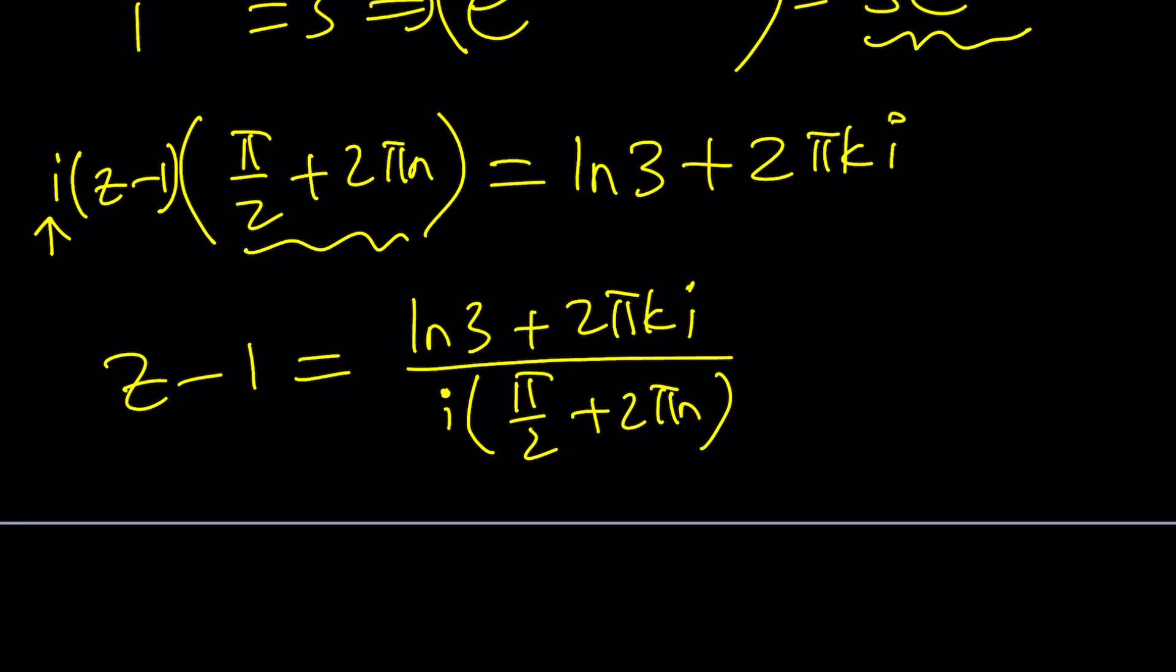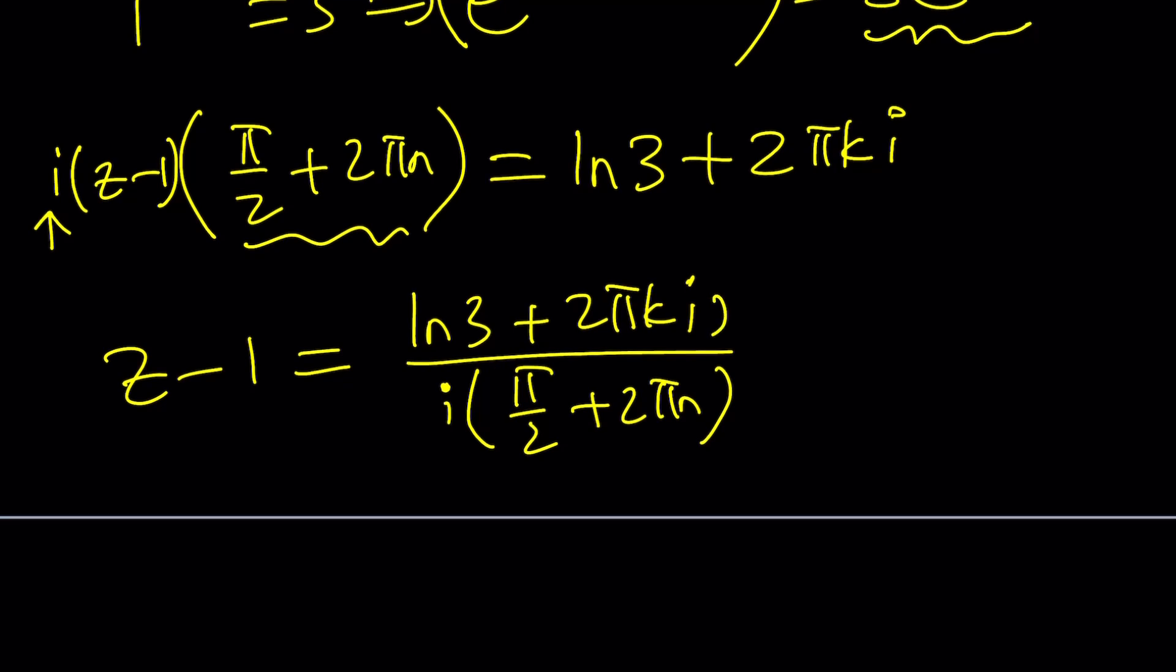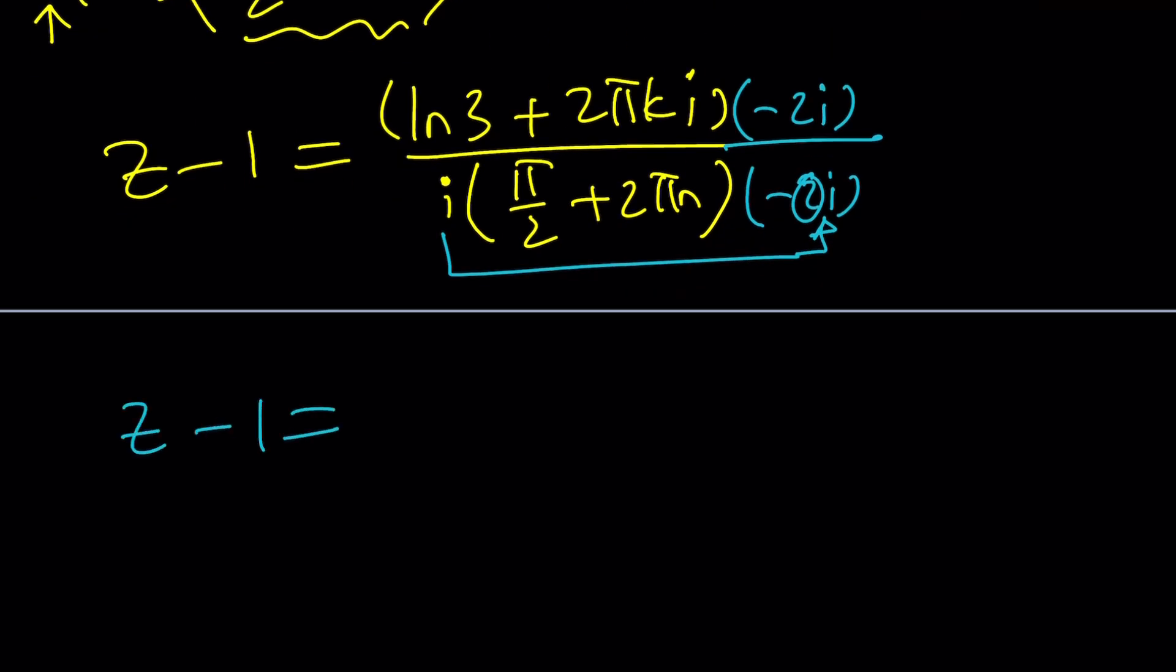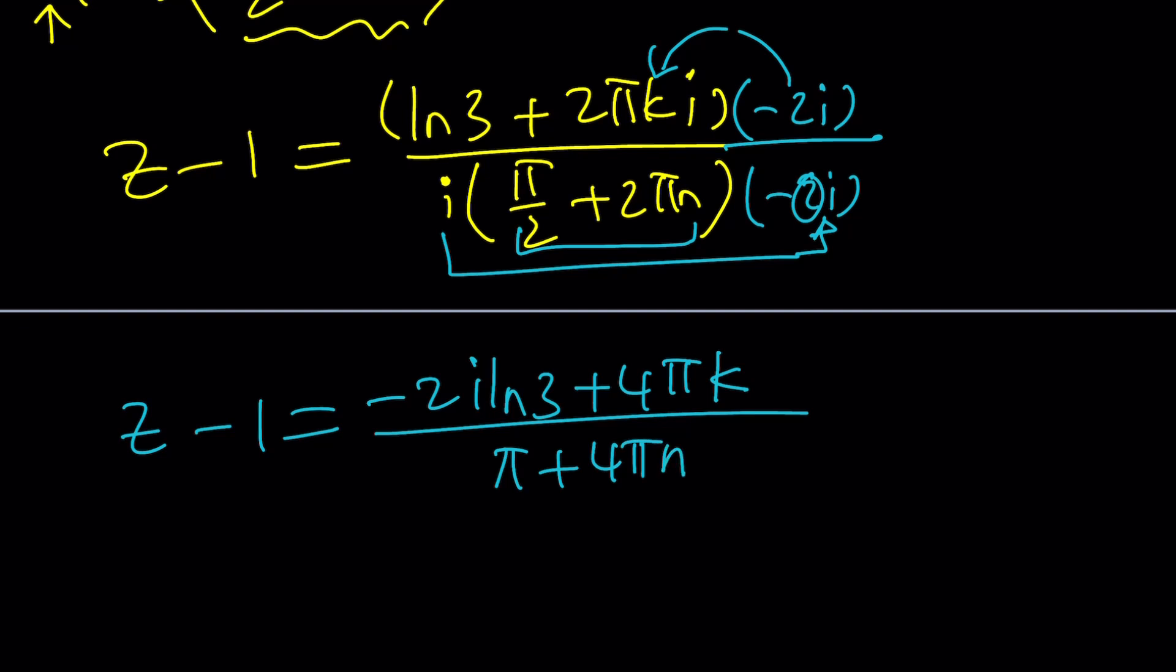My next step is going to be multiplying both sides by i to get rid of the i at the bottom. But if you multiply by 2i, it's actually better. I think I'm going to use negative 2i. This is what I was looking for. Negative 2i here and negative 2i here. You know why? Because when you multiply i by negative i, it's going to give you a positive one. So we can totally forget about it. So the only thing that brings in is going to be a 2 and which that's going to cancel out the terms. Z minus 1 is going to equal negative 2i ln 3. And when you multiply these two things, that's going to give you minus i squared, which is positive 1. So it's going to be 4 pi k.